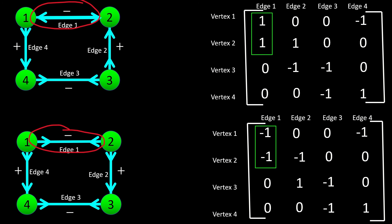For example, looking at edge 1, when we change its orientation, it went from leading into vertex 1 and into vertex 2, meaning the entries 1, 1 and 2, 1 were positive, to leading out of vertex 1 and out of vertex 2, making the entries 1, 1 and 2, 1 negative.